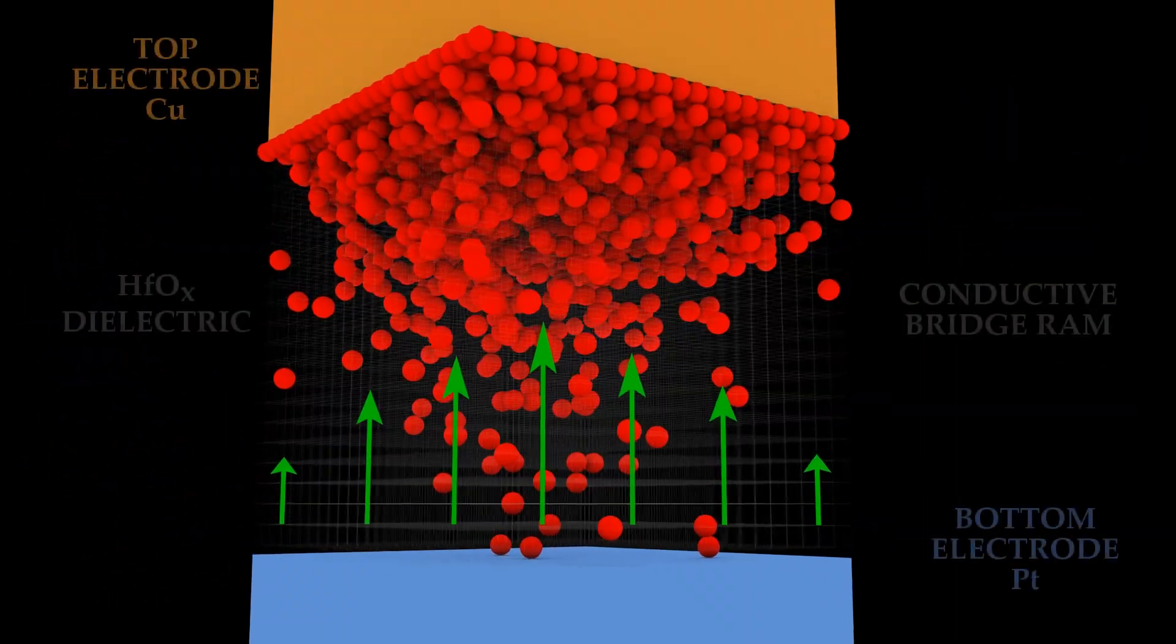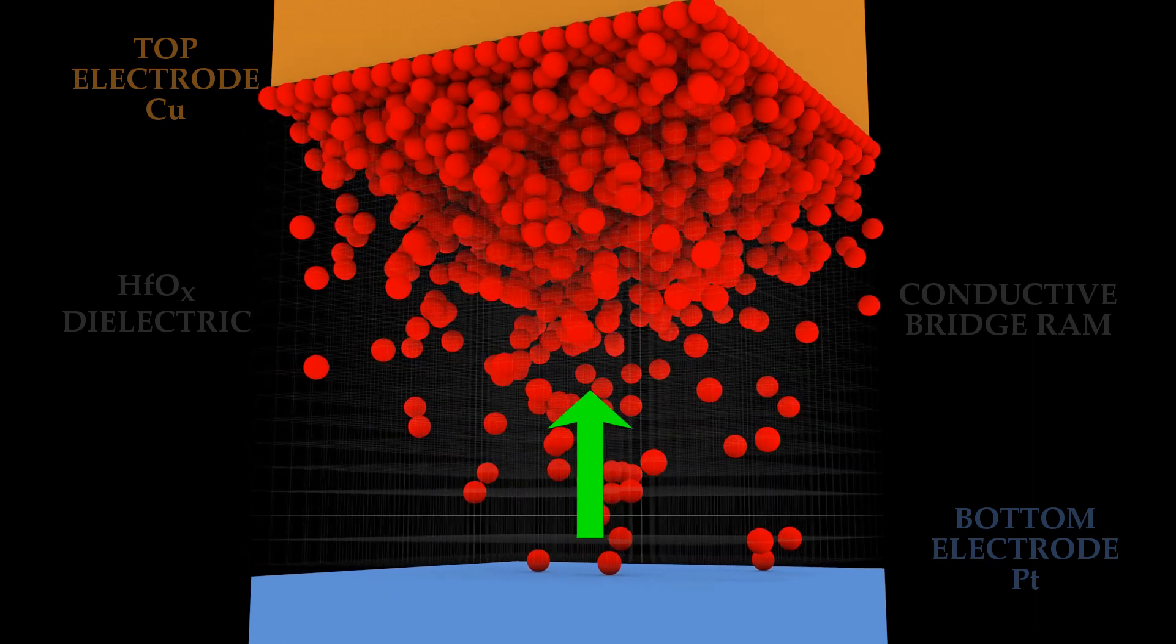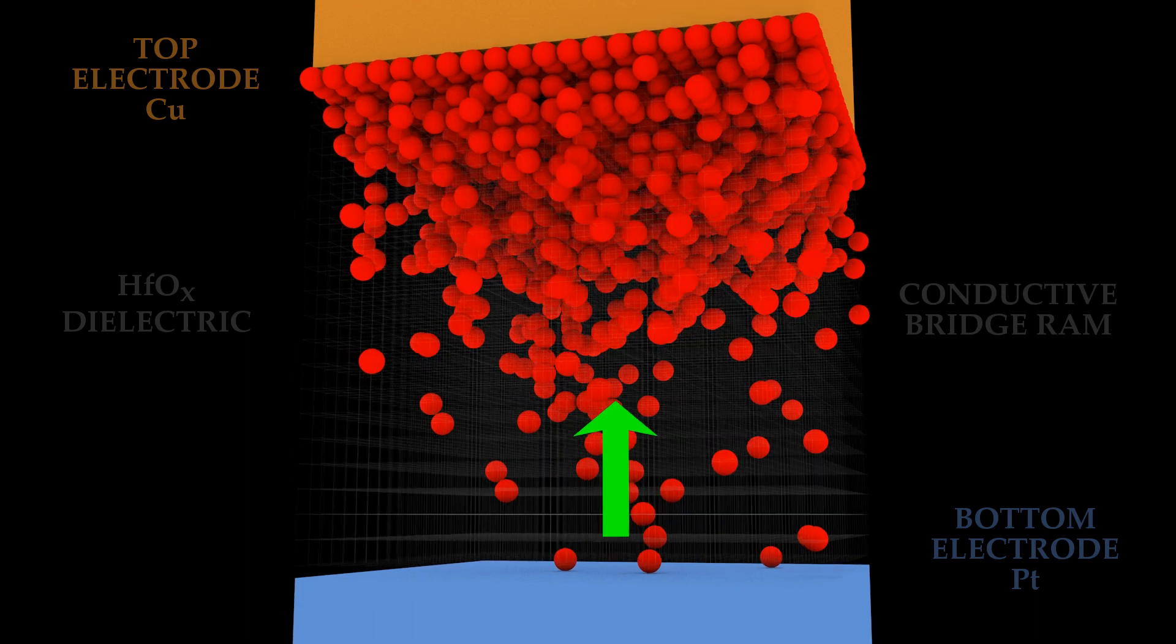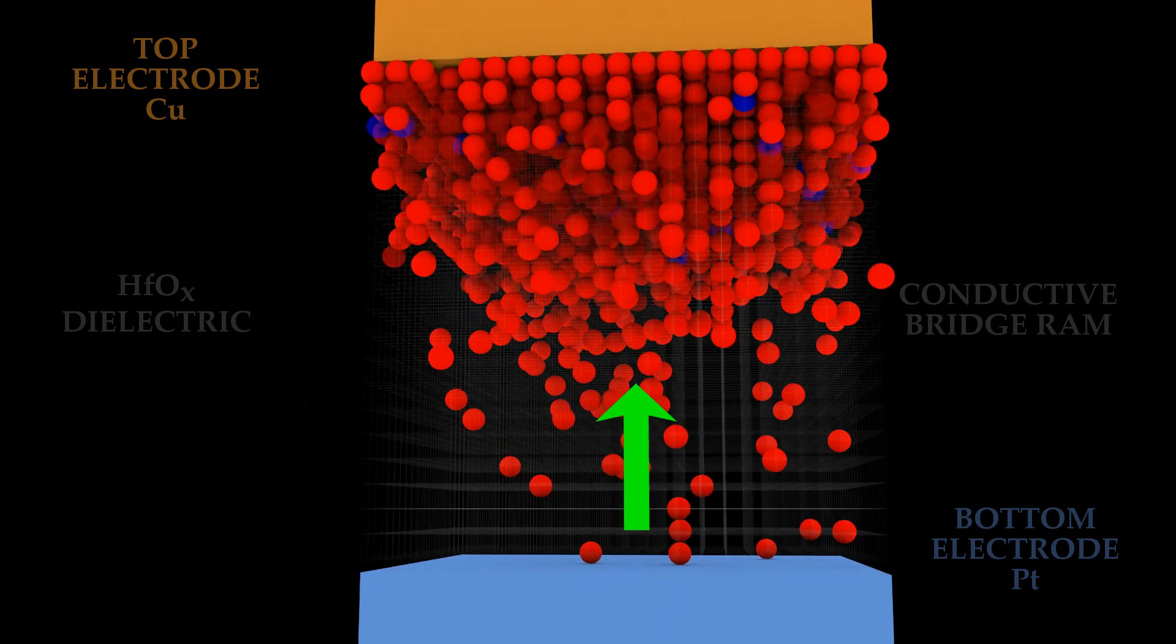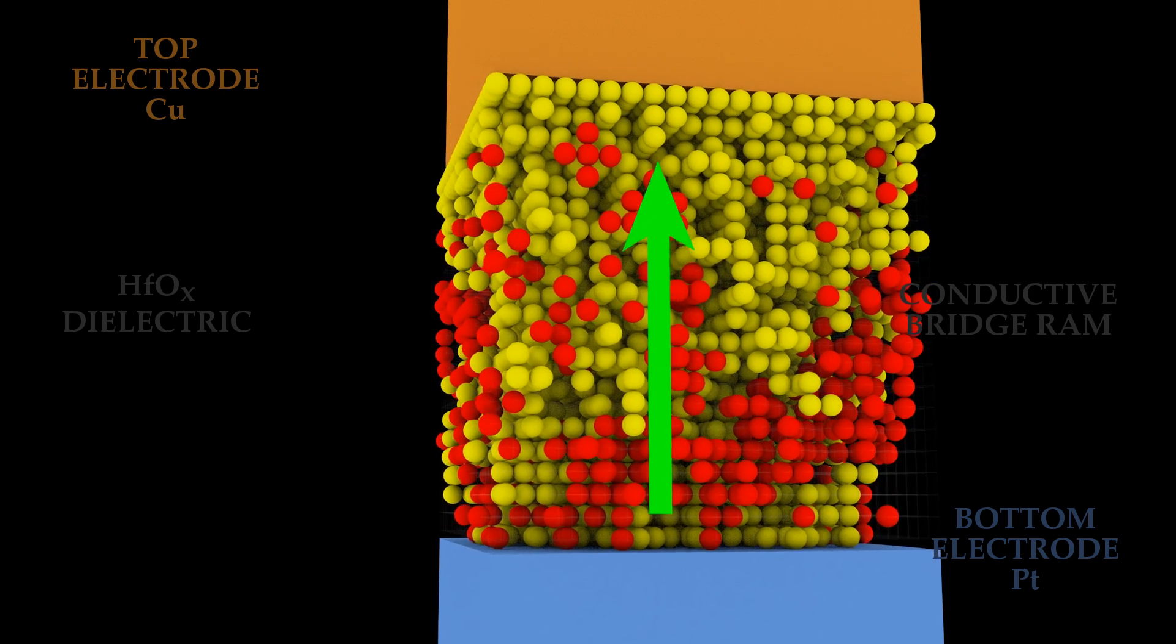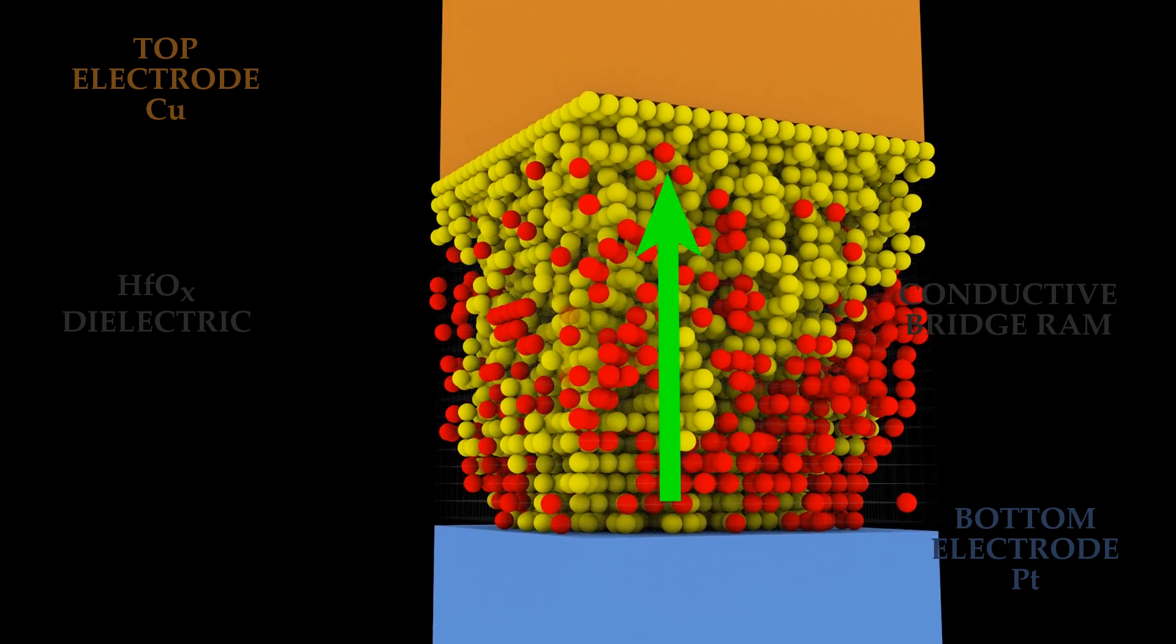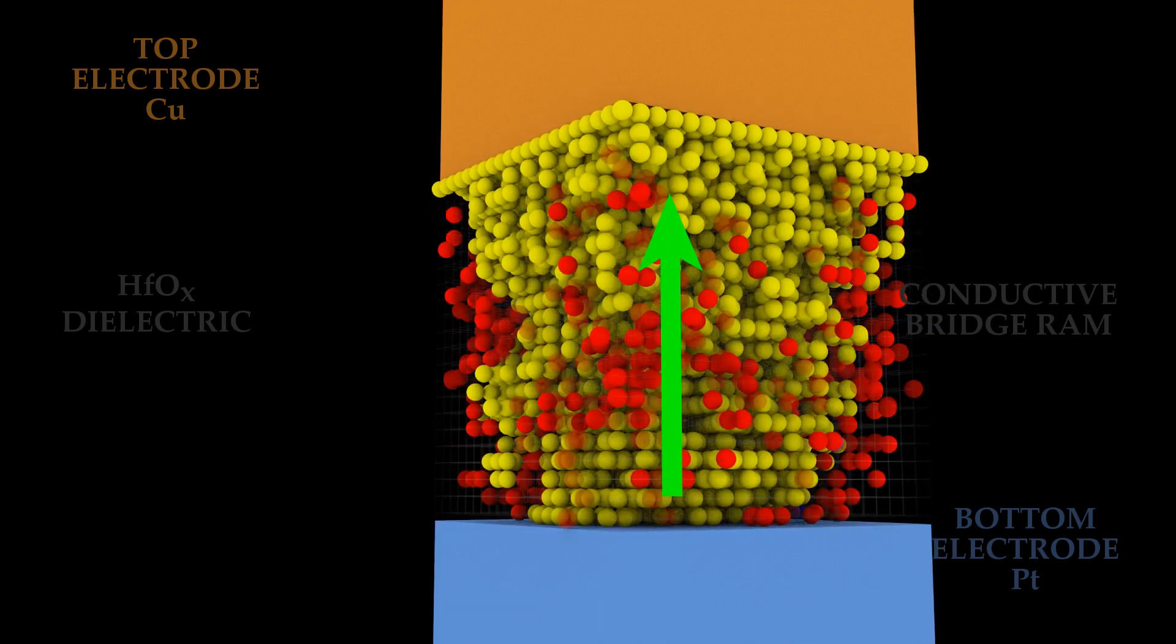The average electric field varies stochastically between the conductive filament tip and the electrode as the filament formation and destruction takes place. The dielectric conduction mechanisms depend exponentially on this local electric field such as Poole-Frenkel and Fowler-Nordheim.